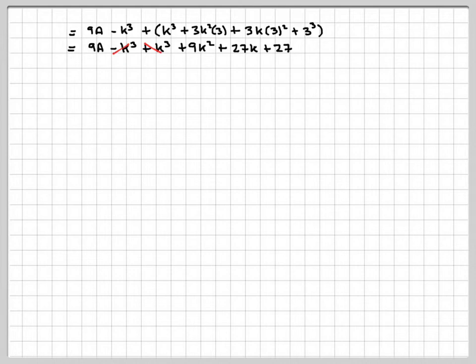The k cubed and the minus k cubed cancel out, and therefore, we get 9a plus k squared plus 3k plus 3, factorizing out a 9 everywhere.